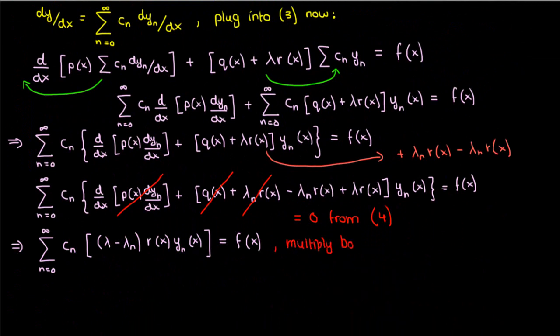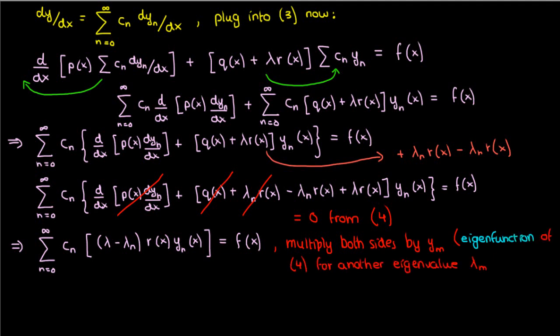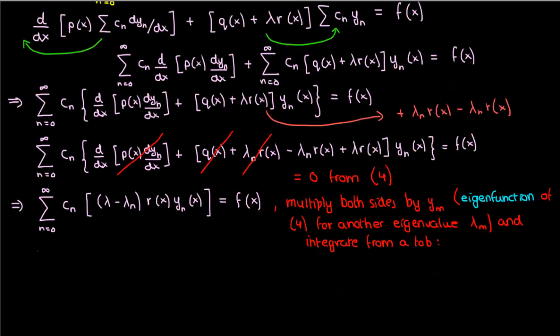What we're going to do now is multiply both sides by y sub m, another eigenfunction of equation 4, corresponding to a different eigenvalue lambda sub n. We're going to multiply both sides by y sub m and integrate from a to b.